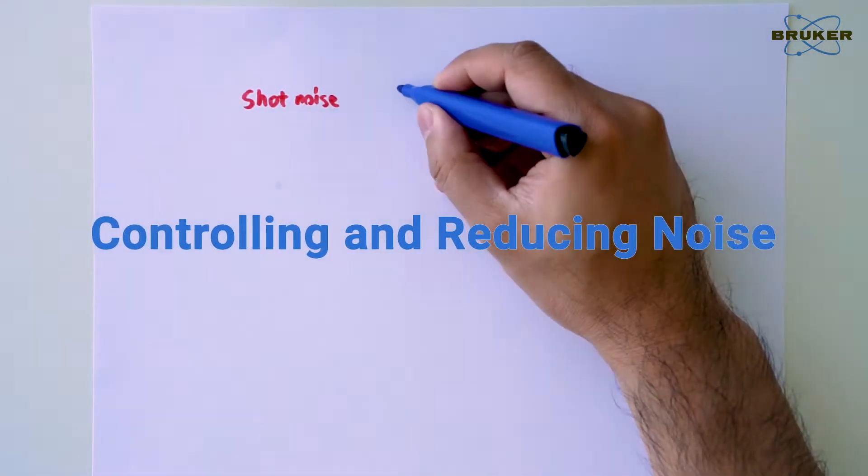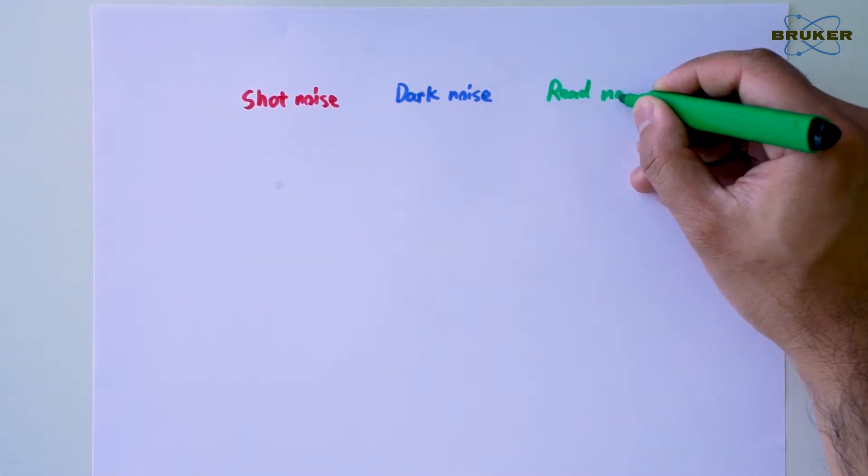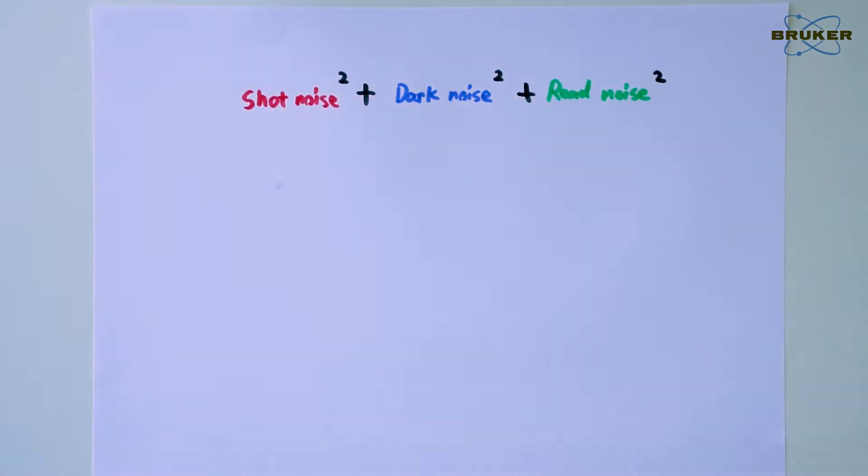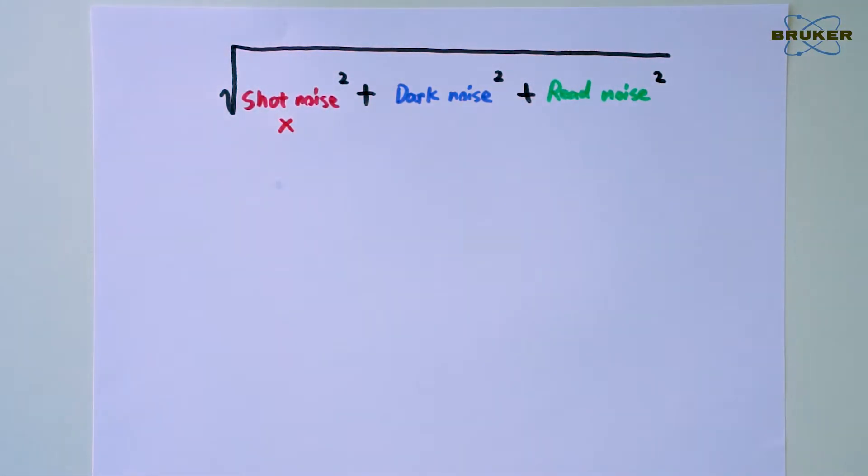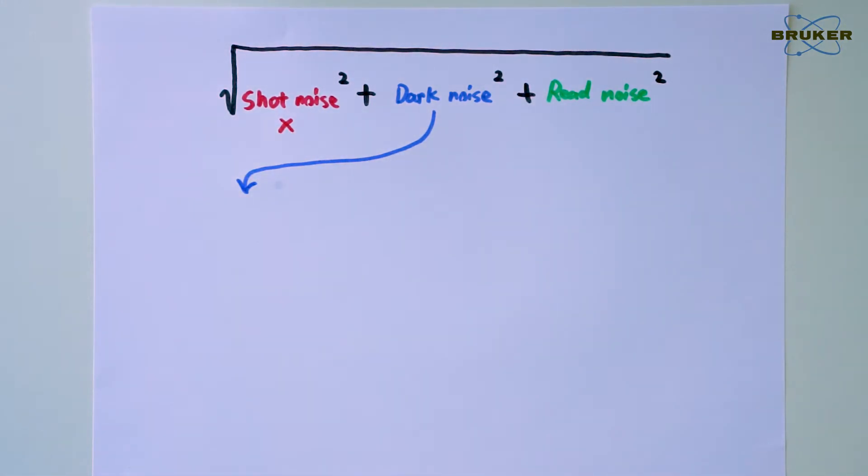Remember that the total noise is the root-sum square of three types of noise: shot noise, dark noise, and read noise. We can't do anything about the shot noise, but things look a bit better for the other two.